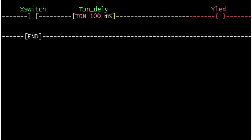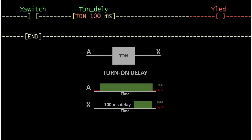The turn on delay timer can be identified by TON, the time interval, and the variable name. When the timer input signal is true for the specified time interval, its output is delayed for that time interval before it will become true. The output will immediately become false once the input changes to false. If the input goes false before the specified time interval elapses, the output will not become true.